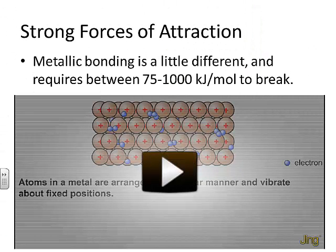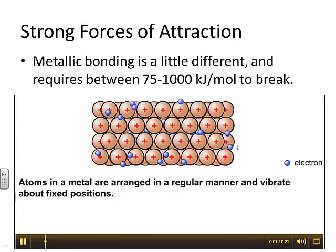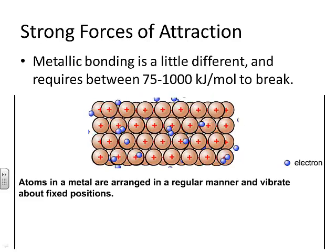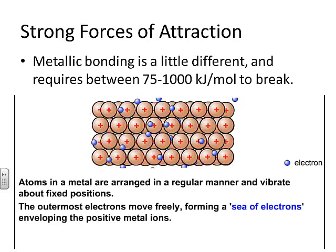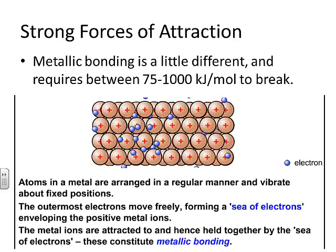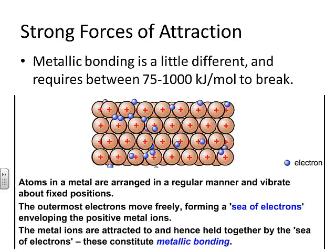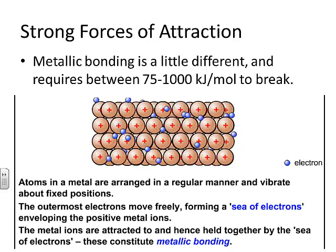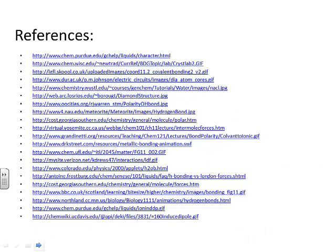Metallic bonding is a little different. Depending upon the substance, it requires between 75 and 1,000 kJ/mol to break metallic bonds. Atoms in a metal are arranged in a very regular manner — they vibrate about fixed positions, and those outer electrons move very freely, giving us that sea of electrons. The attraction between those positive cations and that sea of electrons is what we refer to as metallic bonding. That concludes our first video on these forces of attraction. These were the strong forces; we'll cover the weak forces in the next video.